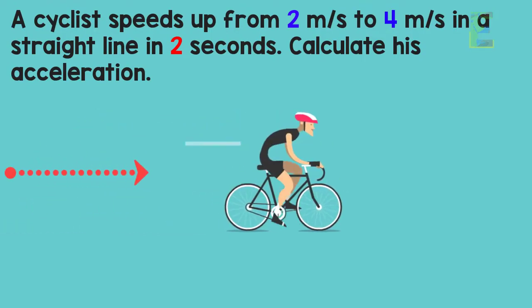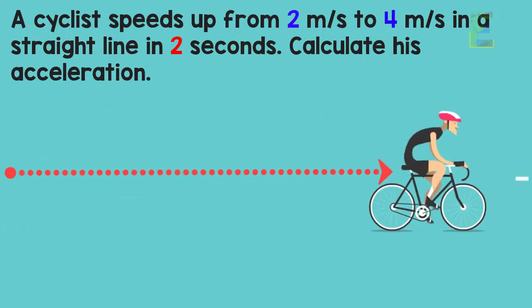So now let's have this problem: a cyclist speeds up from 2 meters per second to 4 meters per second in a straight line in 2 seconds. Calculate his acceleration.